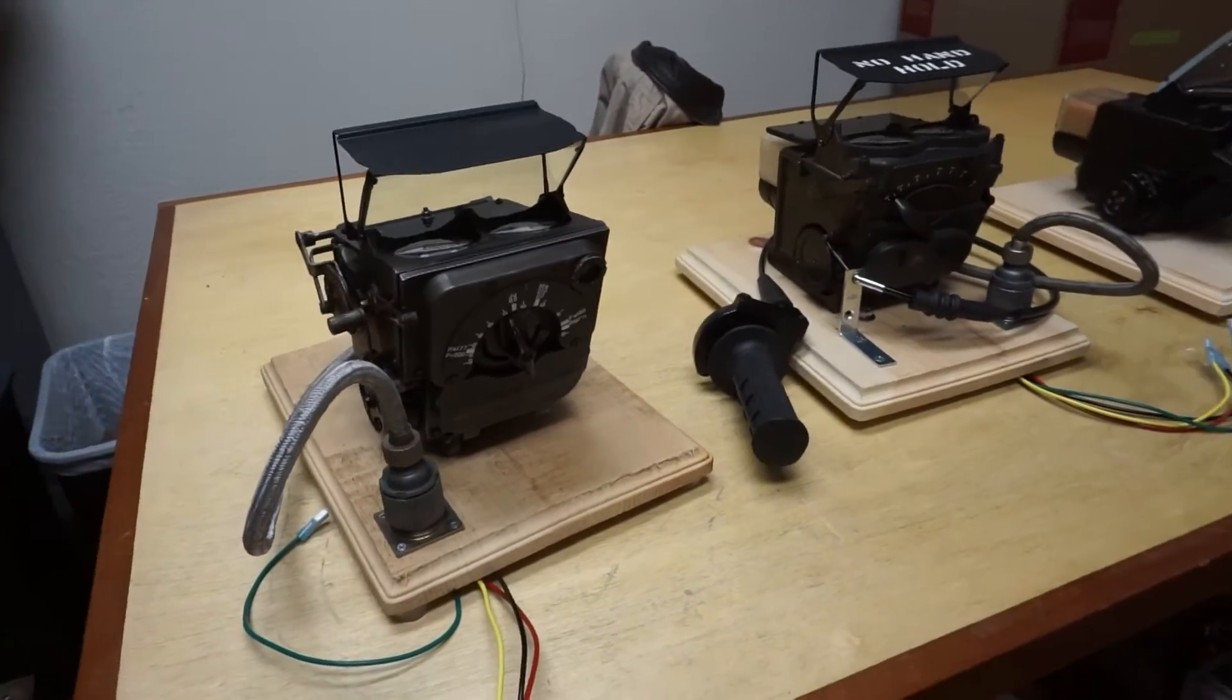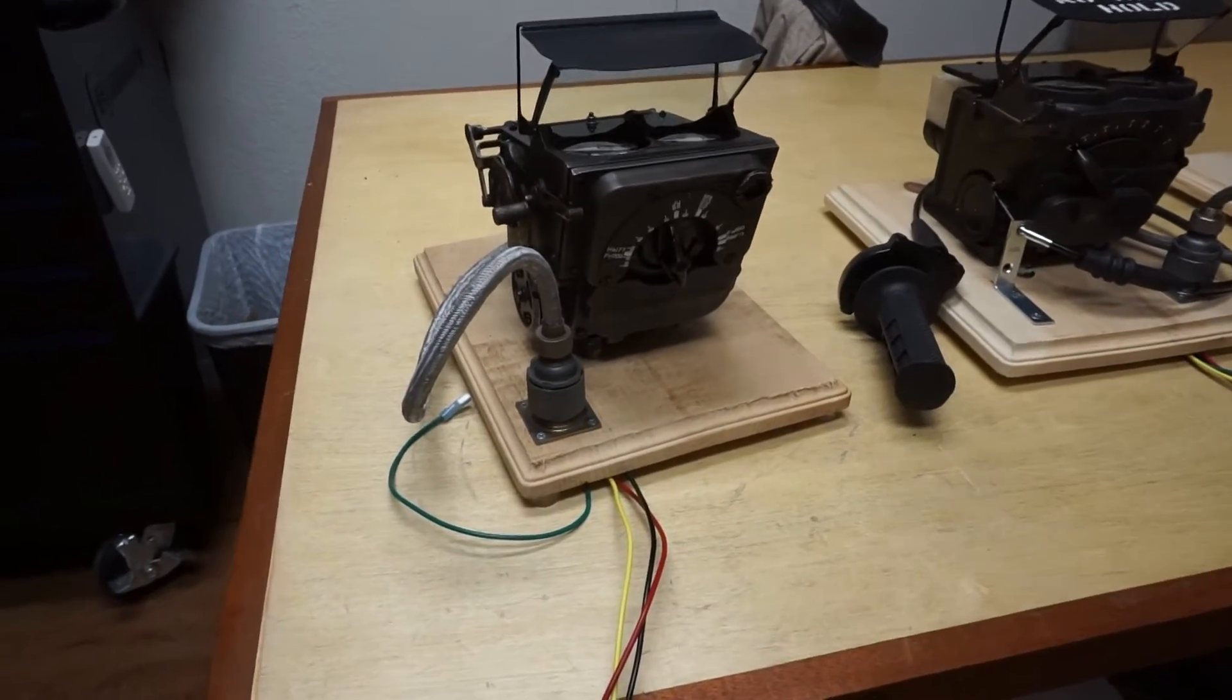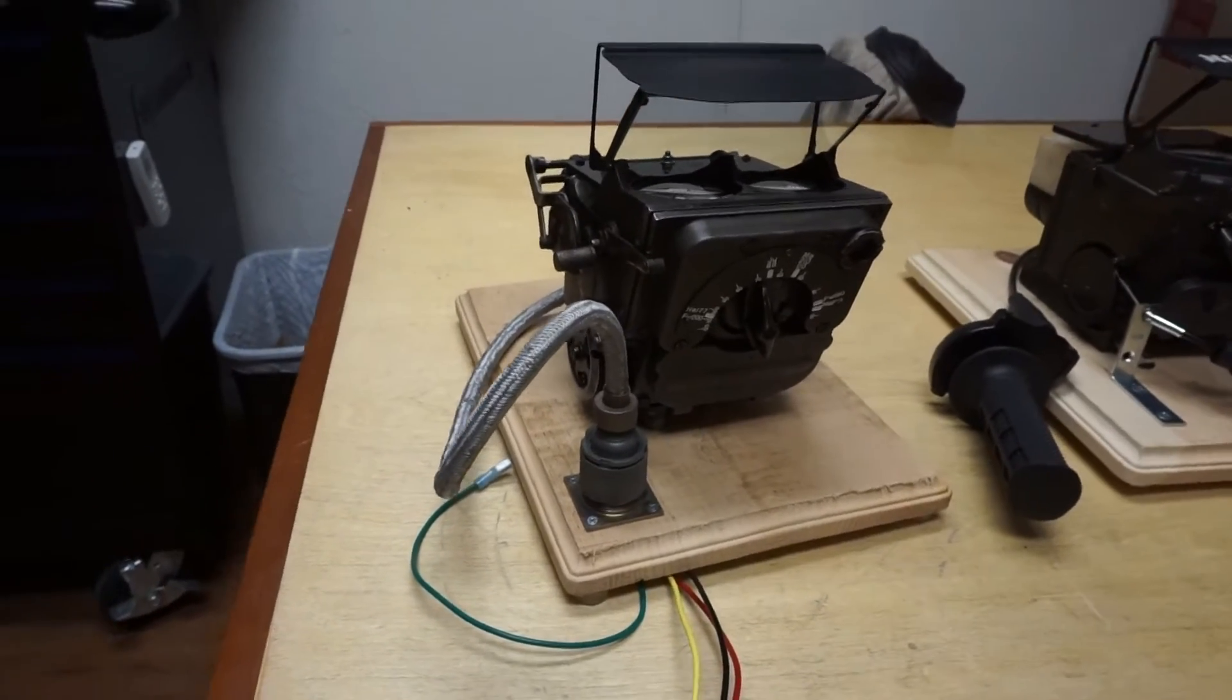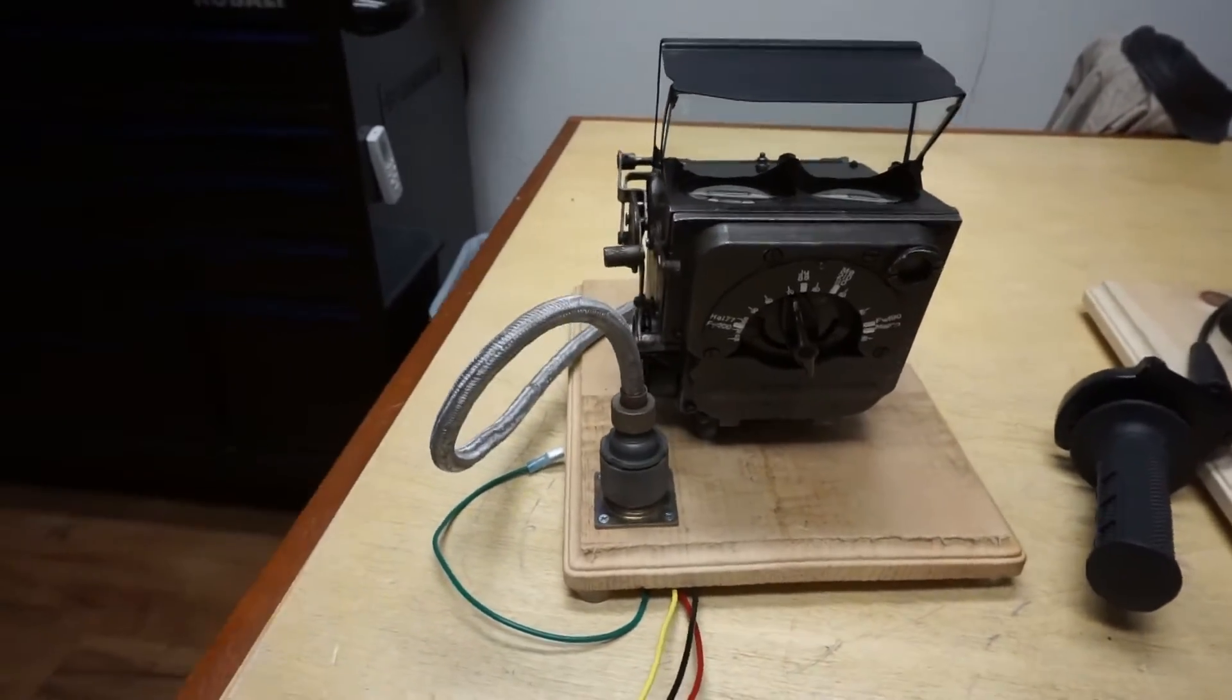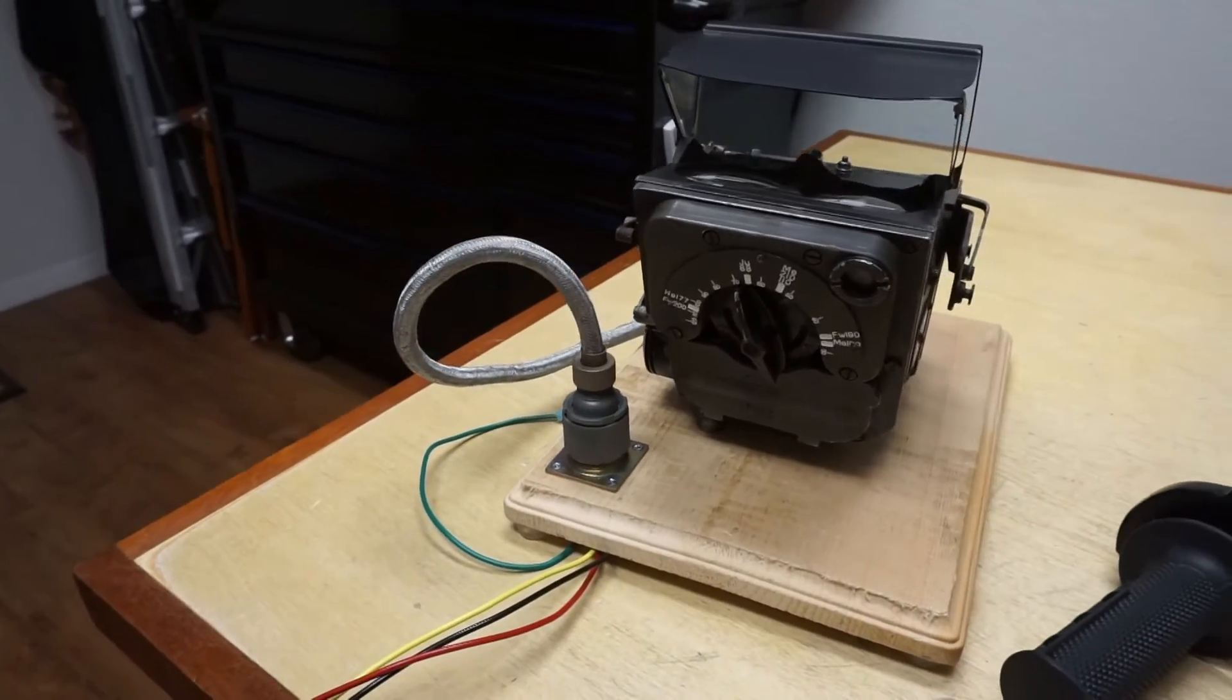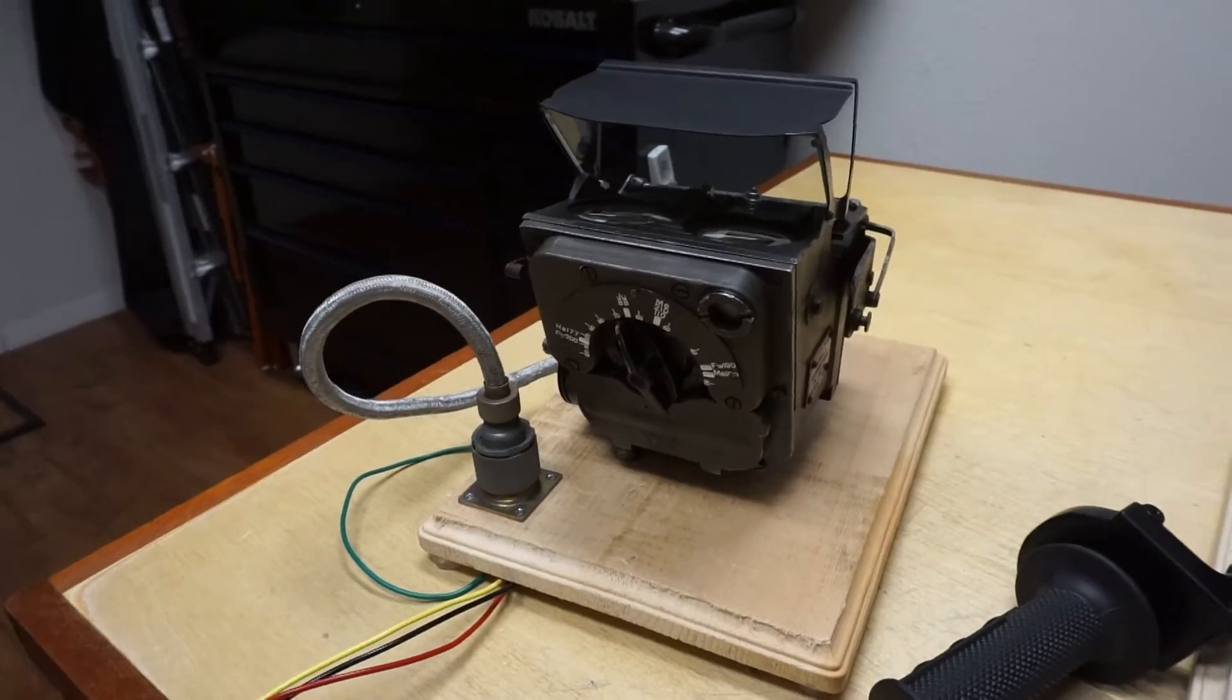Because this was unsatisfactory this led to the development of the Mark 2 gyro gun sight which was the first successful gyro gun sight used by the Allies and although it was British this was also used in United States Army Air Forces aircraft.